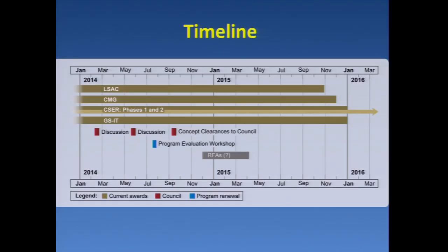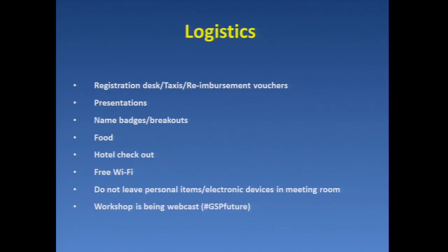I did say I would show the timeline. This is the timeline for the four different components of the genome sequencing program. Here we are at the little blue bar — the program evaluation workshop. You can see that the different programs have slightly different endings, and the gray box is when roughly we would have to issue any solicitations coming out of this workshop. There is a council meeting in September when any concepts will be discussed in open session. Any questions or comments?